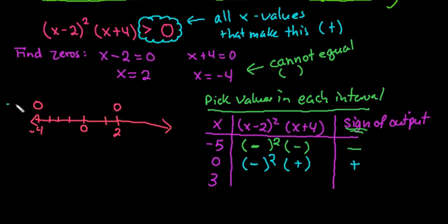So we know that over here, all of these values are going to give me negative answers. Over here, all of these values are going to give us positive. So we know that everything between negative 4 and 2, not including them, would give us a positive answer, which is what we're looking for.